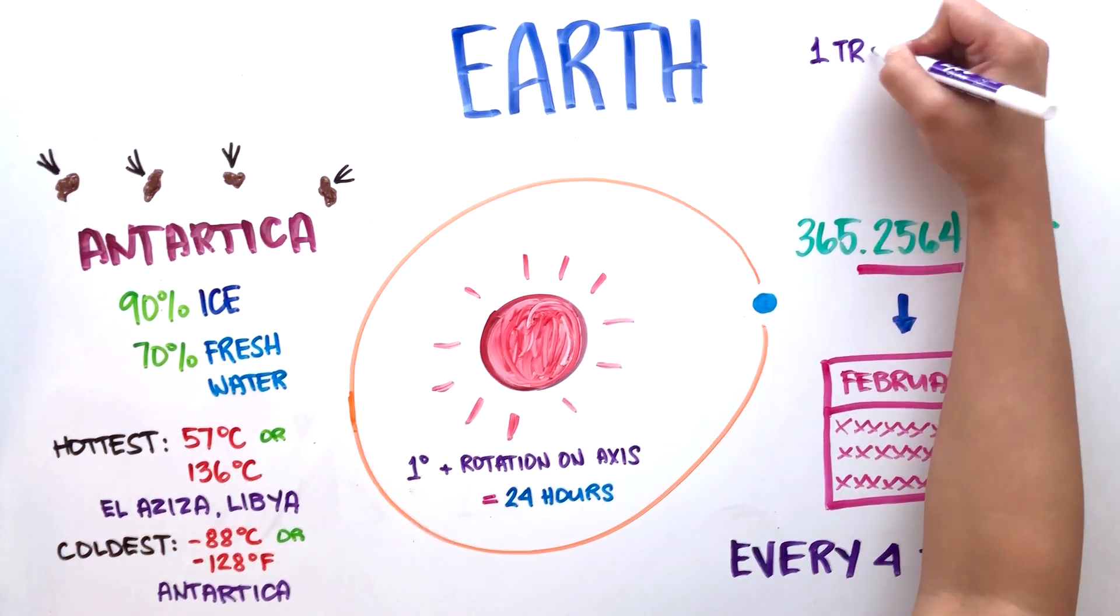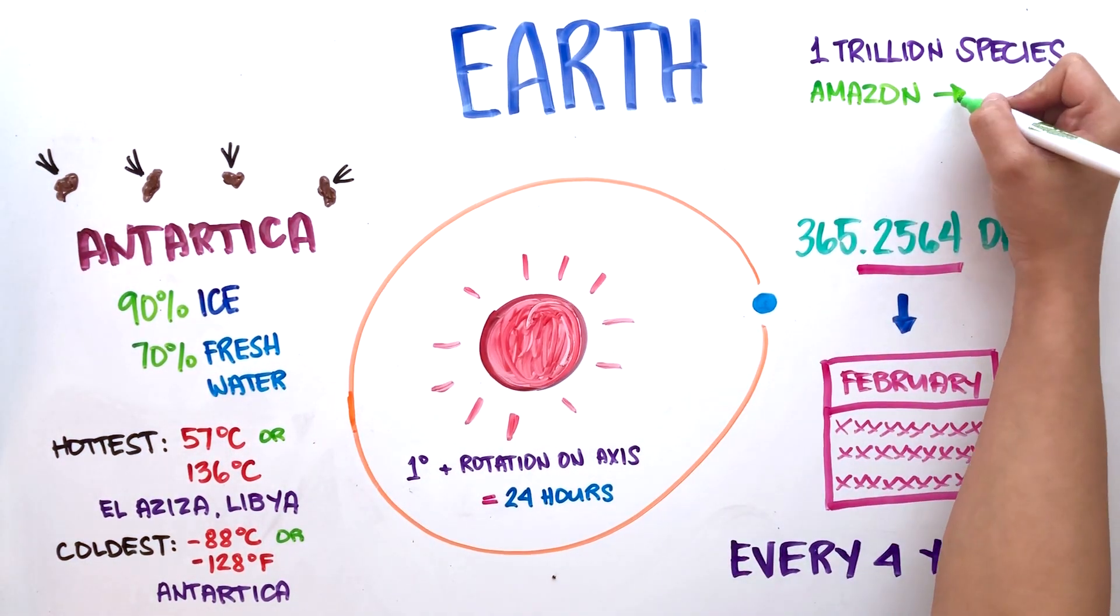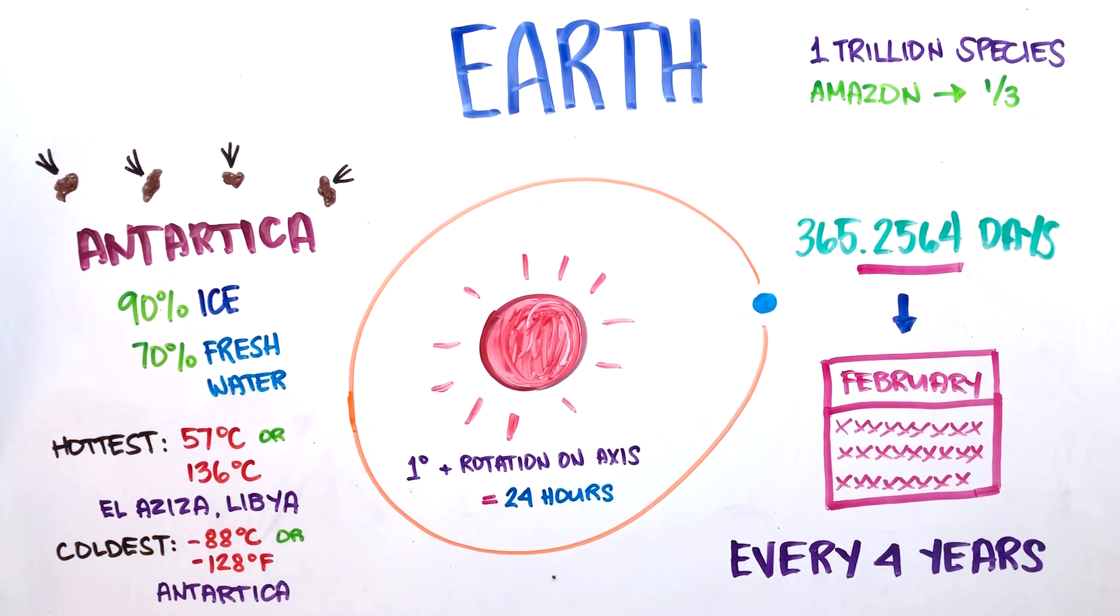There are over 1 trillion different species on Earth. The Amazon rainforest is home to one-third of the planet's land species. And although 70% of the planet is covered in water, only 5% of it has been explored.